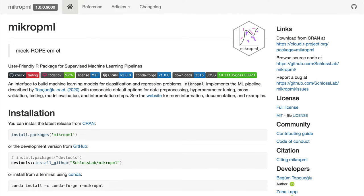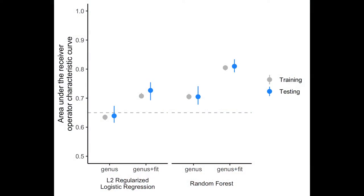In the previous episode I showed how we could use MicrobeML to adapt our L2 regularized logistic regression code to build random forest models. In this episode I'd like to create a figure that compares the performance of our different modeling approaches, the different types of features — relative abundance versus relative abundance plus fit — and the performance for the training set versus the testing set, incorporating variation across those 80/20 splits.